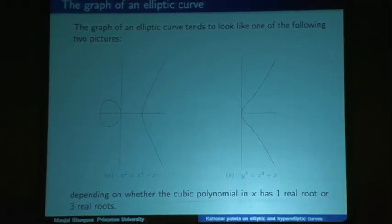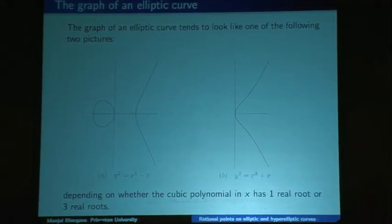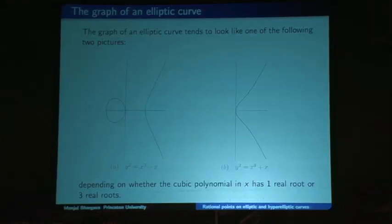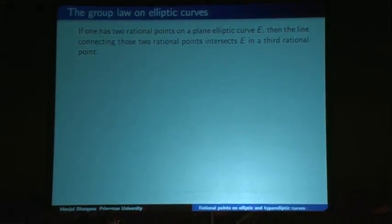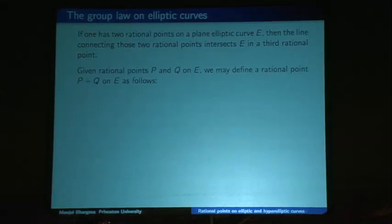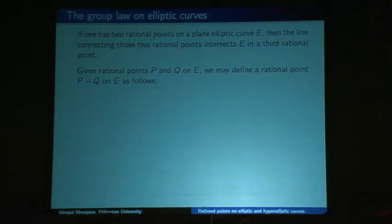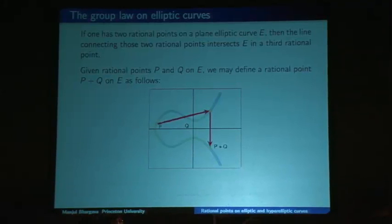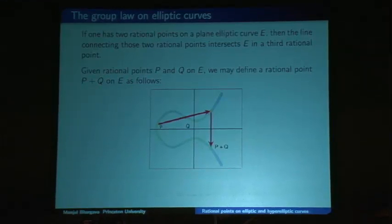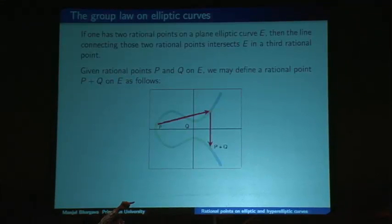The amazing thing about elliptic curves is that if one has two rational points on an elliptic curve, the line connecting them intersects the elliptic curve in a third rational point. Given rational points P and Q on your elliptic curve, you can define a rational point P + Q as follows: take the line connecting P and Q, find where it intersects the elliptic curve at a third point, and reflect that point across the x-axis (since all hyperelliptic curves are symmetric about the x-axis). That third reflected point is called P + Q.